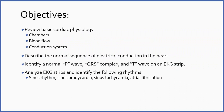If you printed the EKG packet and you're looking at that — and you should, it'll make it easier — you see objectives for the entire packet. We're only going to go through the first part as a preclinical lab assignment. The objectives include reviewing basic cardiac physiology including heart chambers, blood flow, and the conduction system; describing the normal sequence of electrical conduction; identifying a normal P wave, QRS complex, and T wave; and analyzing EKG strips to identify sinus rhythm, sinus bradycardia, sinus tachycardia, and atrial fibrillation.